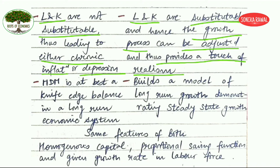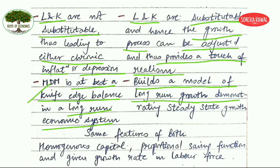The last difference: the Harrod-Domar model is at best a knife-edge balance. Its conclusion is that you can reach a knife-edge equilibrium in the long run, but if you deviate from that point it leads to either chronic inflation or chronic depression. The Solow model, on the other hand, builds a model of long-run growth demonstrating steady-state growth, and is thereby more realistic compared to the Harrod-Domar model.